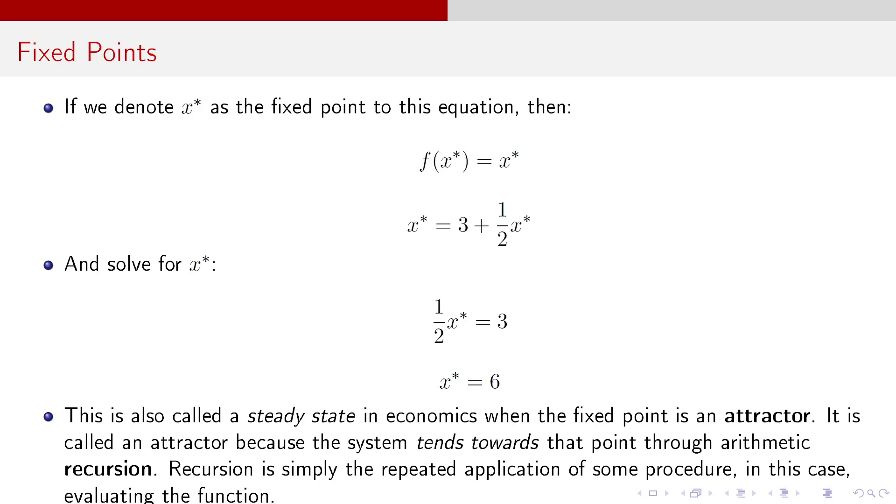If we were to denote X* as the fixed point to this equation, right, what I would do is f(X*) equals X*. So, X* equals 3 plus 1/2 X*. Well, I would solve for X*, subtract 1/2 X* from each side. I get 1/2 X* equals 3. X* is equal to 6. In economics, it's what's known as a steady state, when the fixed point is an attractor. It's called an attractor because the system tends towards that point through arithmetic recursion. And recursion is simply just the repeated application of some procedure, in this case, evaluating the function.